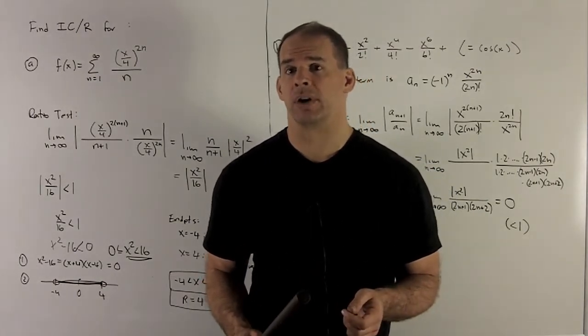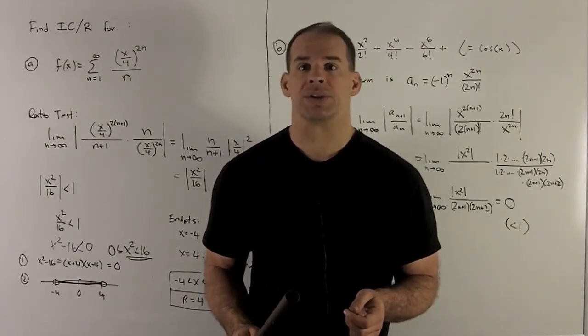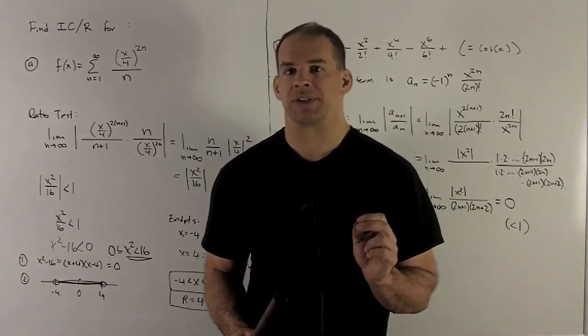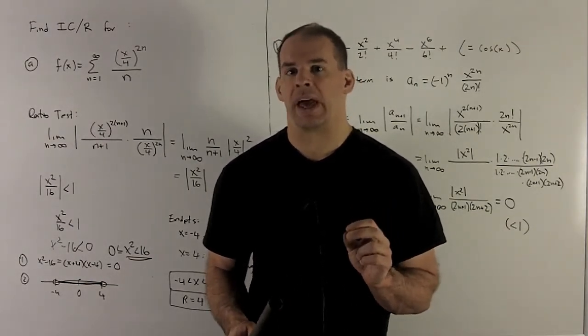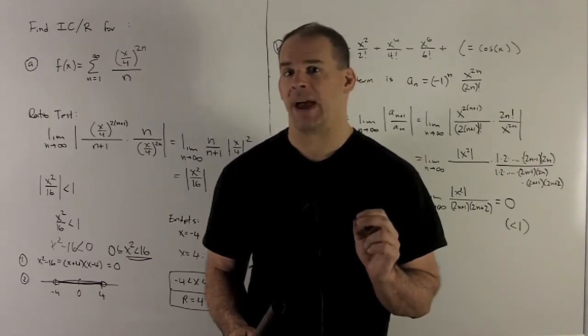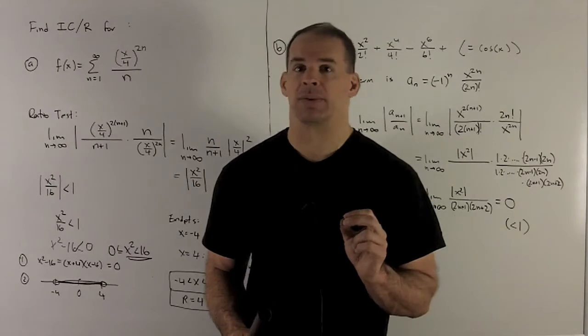Find the intervals and radii of convergence for the following power series. For these two examples, we're going to notch things up a little bit. I'm going to make it so that an x squared comes out when we do the ratio test, and then we'll have to deal with that. This will be useful for later on.